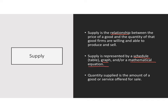You cannot represent a relationship with a single number. You have to have a set of numbers, either in the form of a schedule, a graph, or an equation. Supply is a relationship between price and quantity — the quantity of a good that firms are willing and able to produce and sell. That quantity is referred to as the quantity supplied, which is the amount of a good or service offered for sale by a firm, represented by a number of units produced.